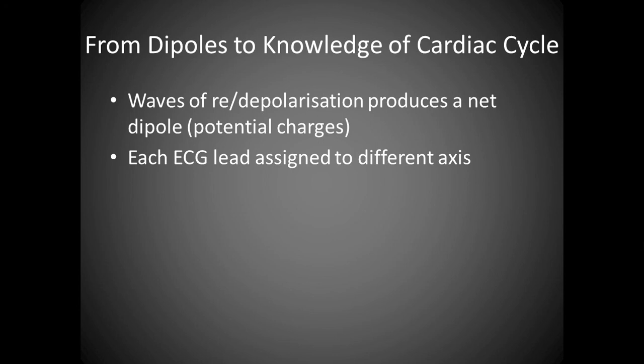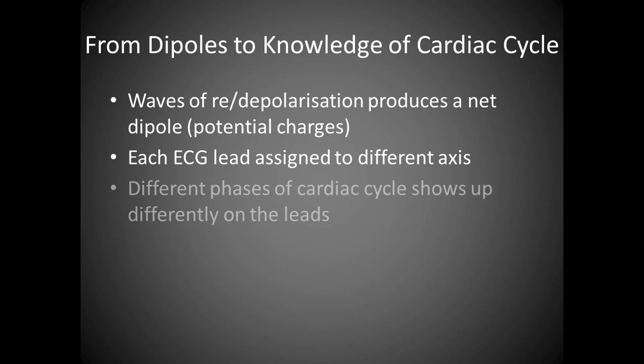By convention, the axis points towards the positive electrodes. The projection of cardiac vectors as a function of time on the axis corresponding to a lead is the ECG trace recorded in that particular lead. If the orientation of the projected vector corresponds to the orientation of the axis, a positive wave is recorded. If opposite, then a negative wave is recorded.